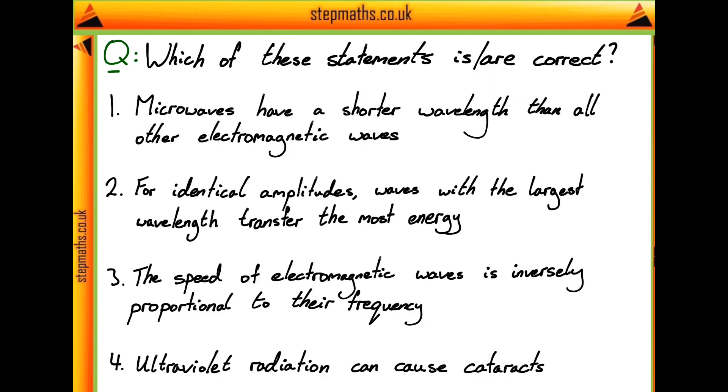So putting those statements up now, the first is that microwaves have a shorter wavelength than all other electromagnetic waves. The second is that for identical amplitudes, waves with the largest wavelengths transfer the most energy. The third is that the speed of electromagnetic waves is inversely proportional to their frequency. And the final statement is that ultraviolet radiation can cause cataracts.